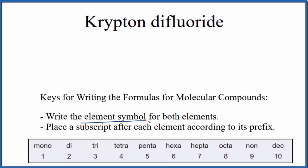First off, we'll write the element symbol for both of the elements. Krypton, that's Kr. Then fluoride, that's from fluorine, so we'll have F.